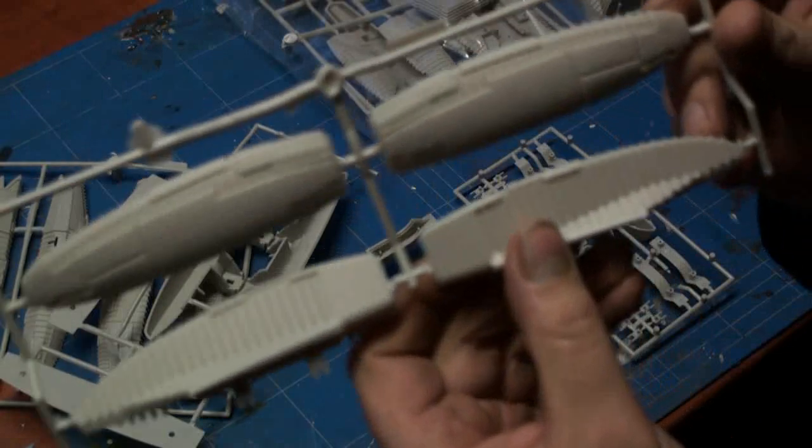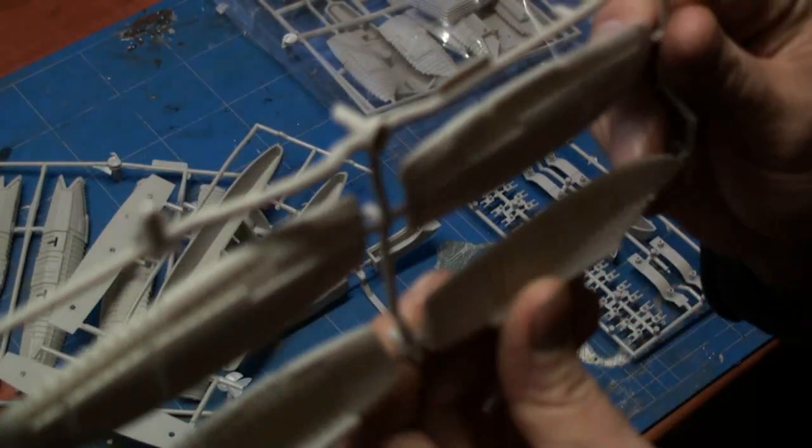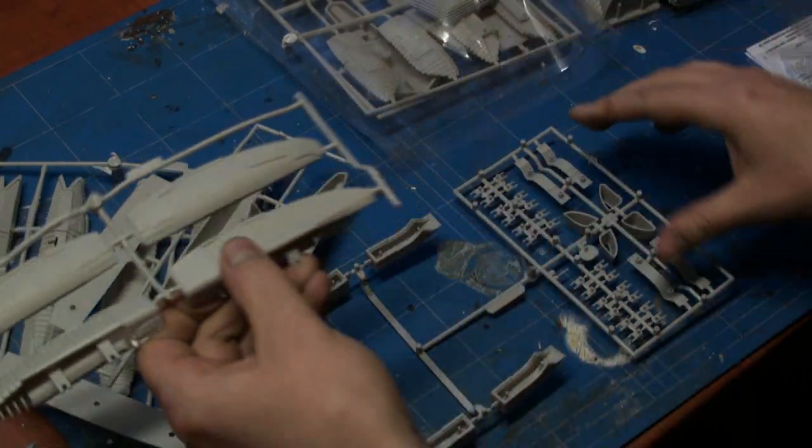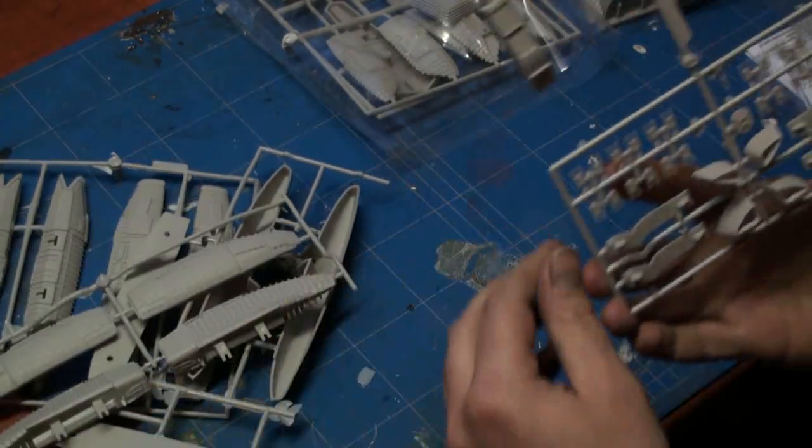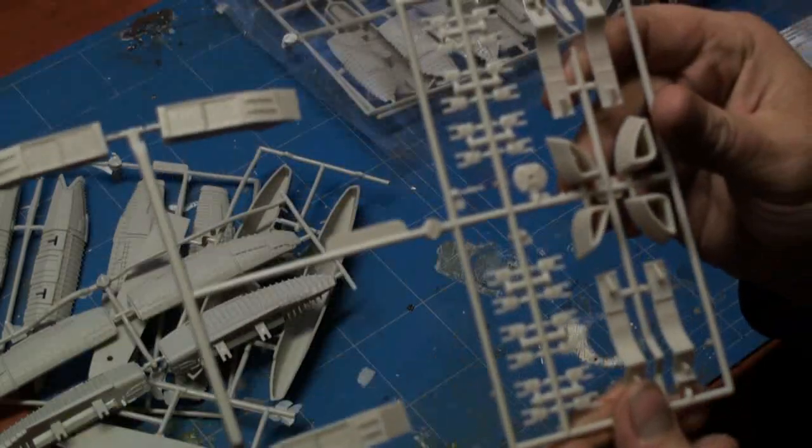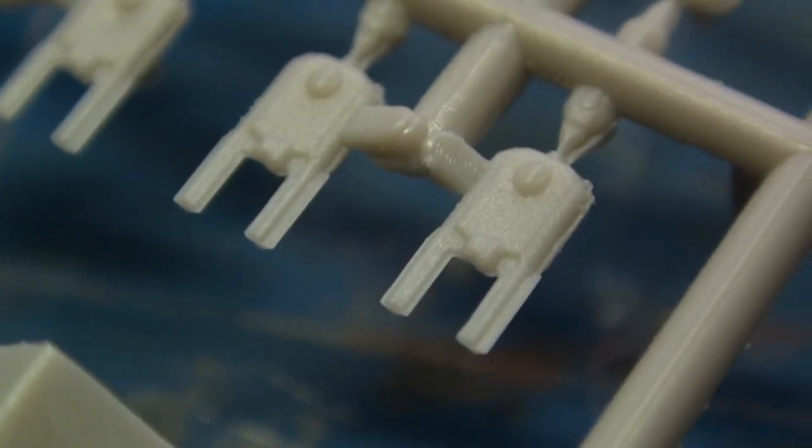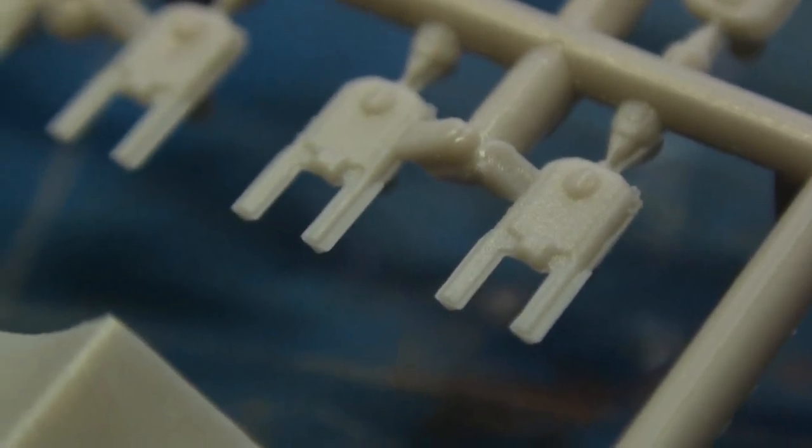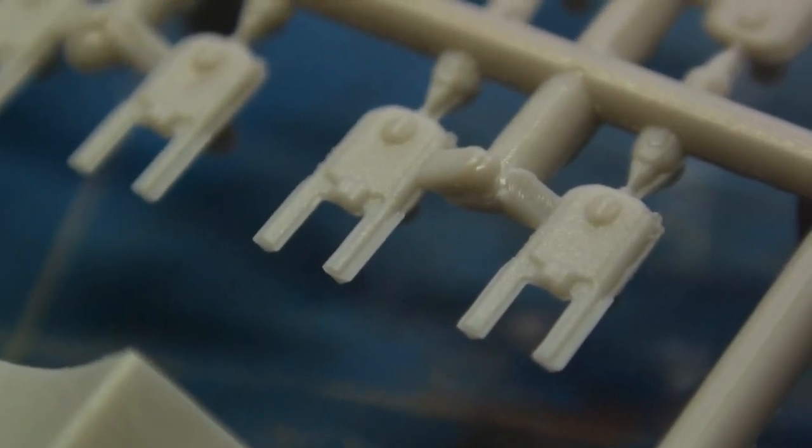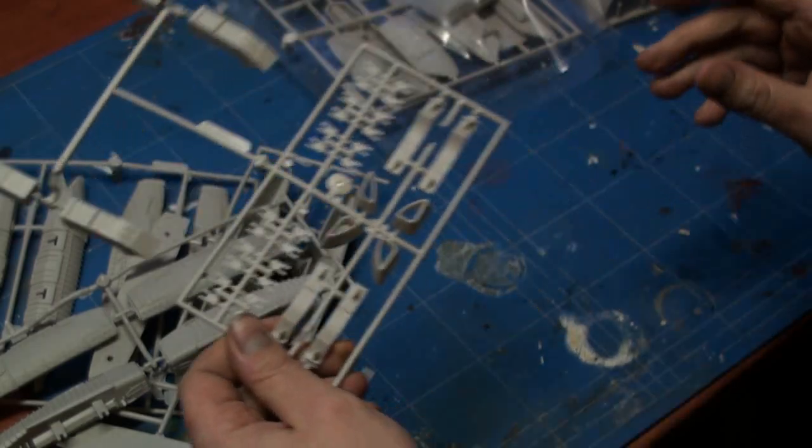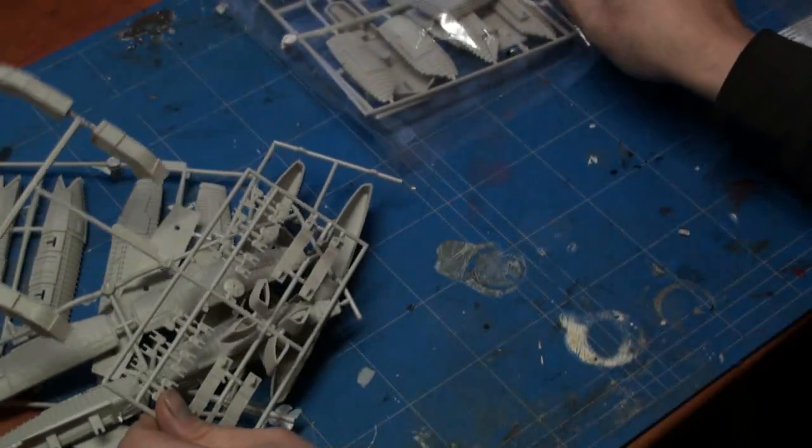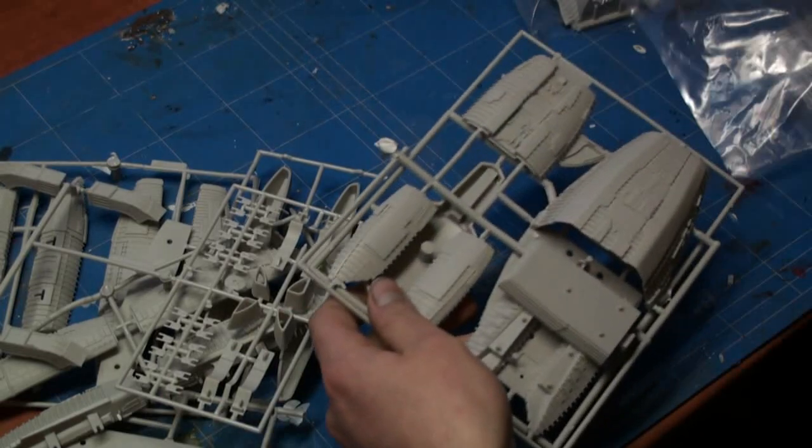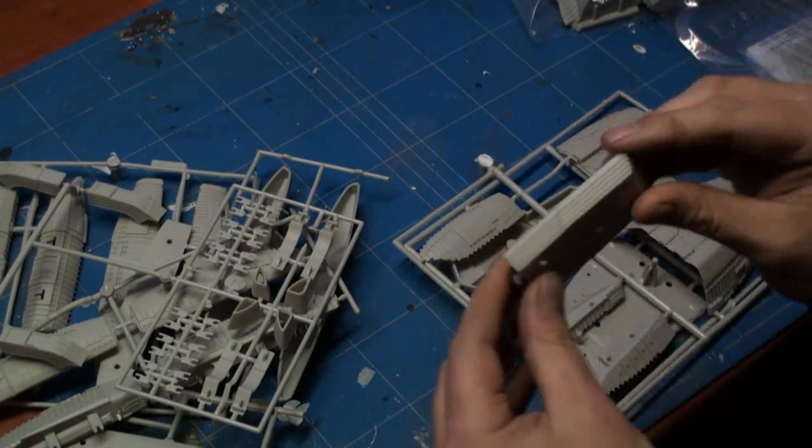These are the larger engines that go on the bottom of the model. The guns—there are aftermarket parts for the guns, but they are not very cheap here in Holland, so I'm gonna stick with these. In the second bag, this is the part where the windows are going to go.